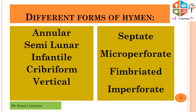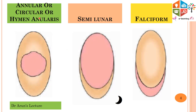Different forms of hymen. First and foremost is annular, semilunar, infantile, cribriform, vertical, septate, microperforate, fimbriated, and imperforate hymens. We will discuss each type of hymen in detail in the upcoming slides. The first type is annular.